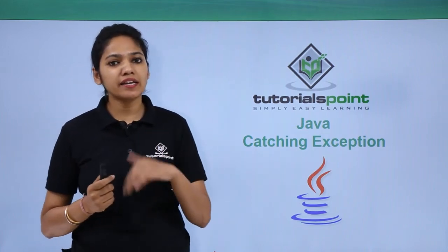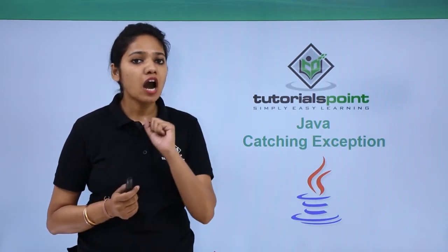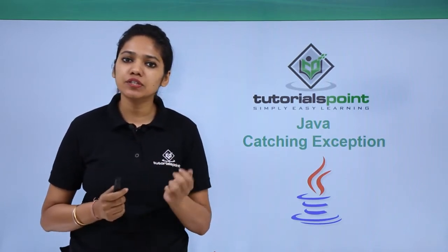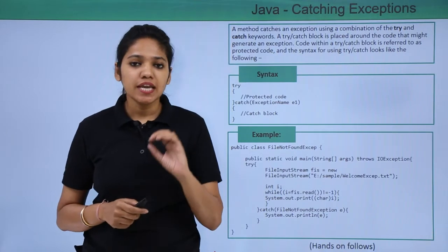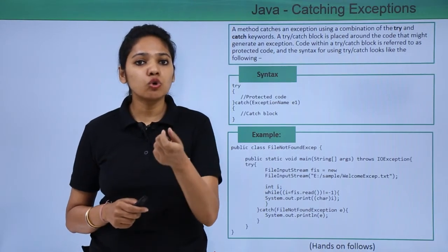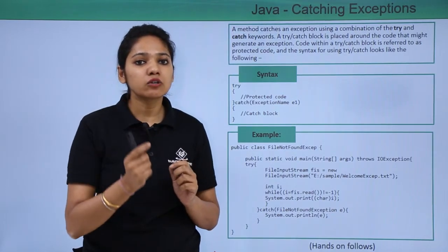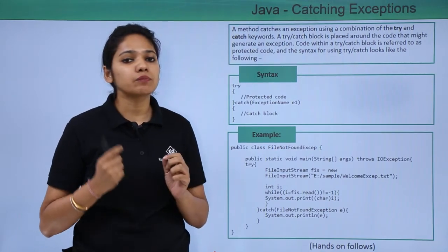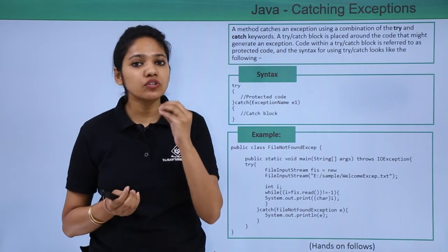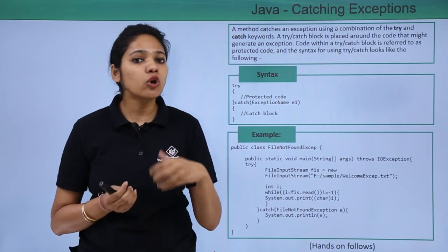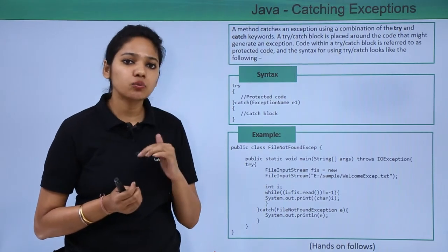Let us now see how you can catch exceptions, that is the errors or exceptions that you receive. How will you hold them? How will you run an exception handler? A method throws an exception and this exception includes a throw clause, which consists of all the kinds of exceptions that have occurred in the program. There are mainly three keywords you need to understand to handle exceptions: try, catch, and finally.